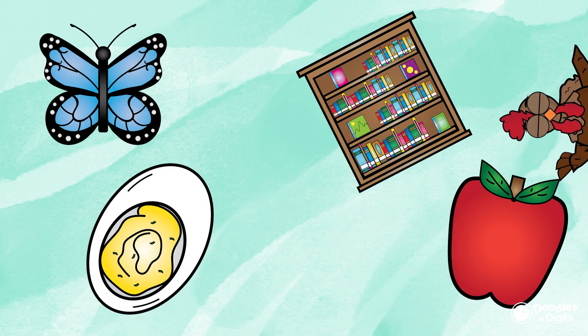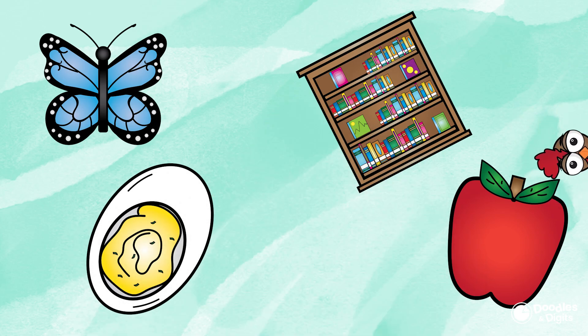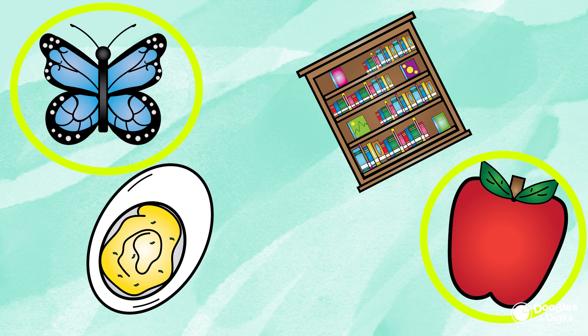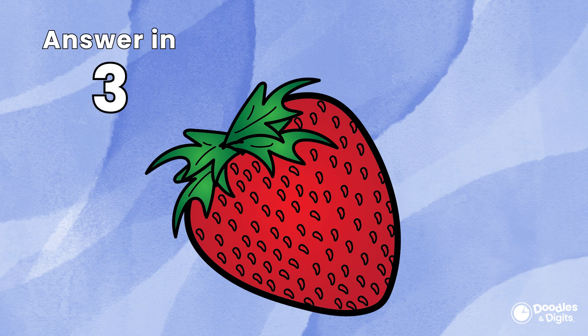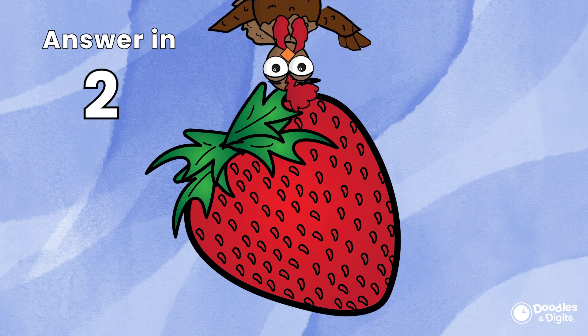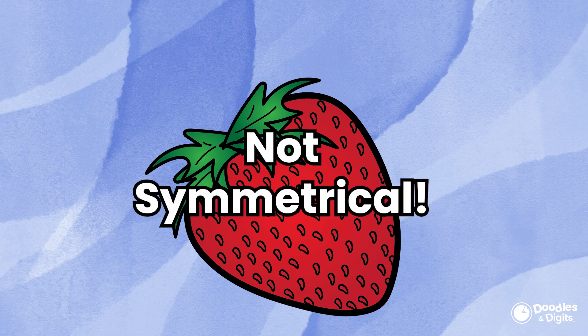Look on the screen now. Which one of these are symmetrical? Now that we've tried a few together, let's see if you can figure out which objects are symmetrical on your own. Is this symmetrical? Nope, it's not symmetrical.